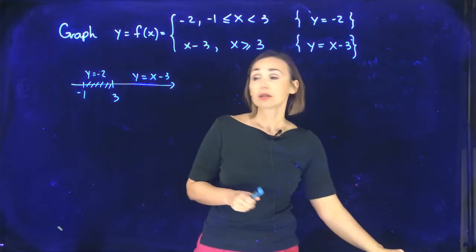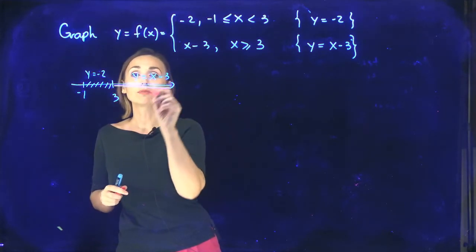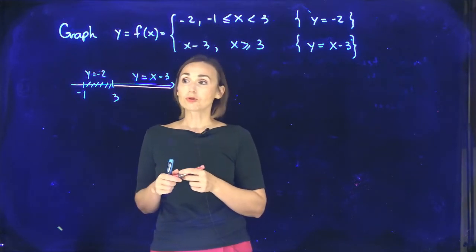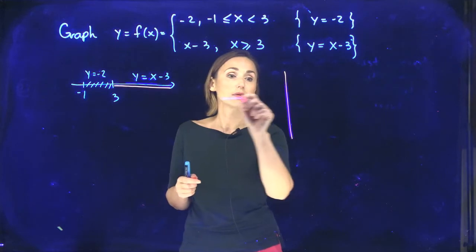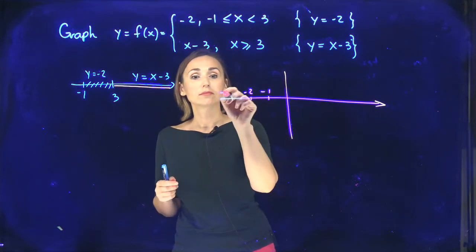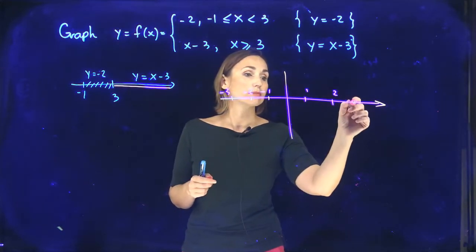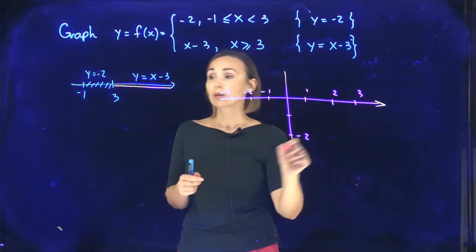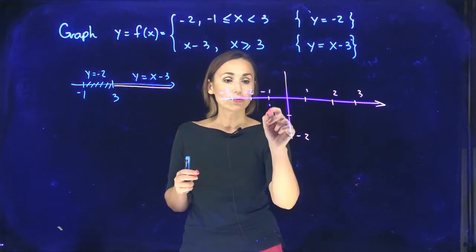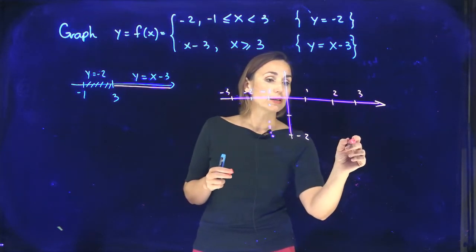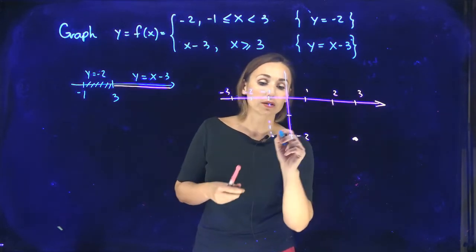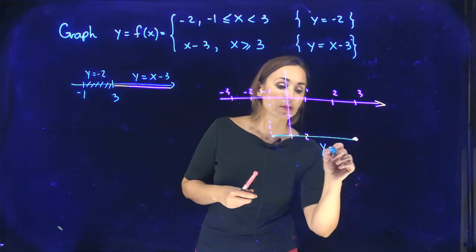Let me use another color so you will see the difference. After 3, my function is y equals x minus 3. It's really easy to graph y equals negative 2 because it is just a horizontal line. This horizontal line exists between negative 1 and positive 3. I use blue color for this segment — this is y equals negative 2.